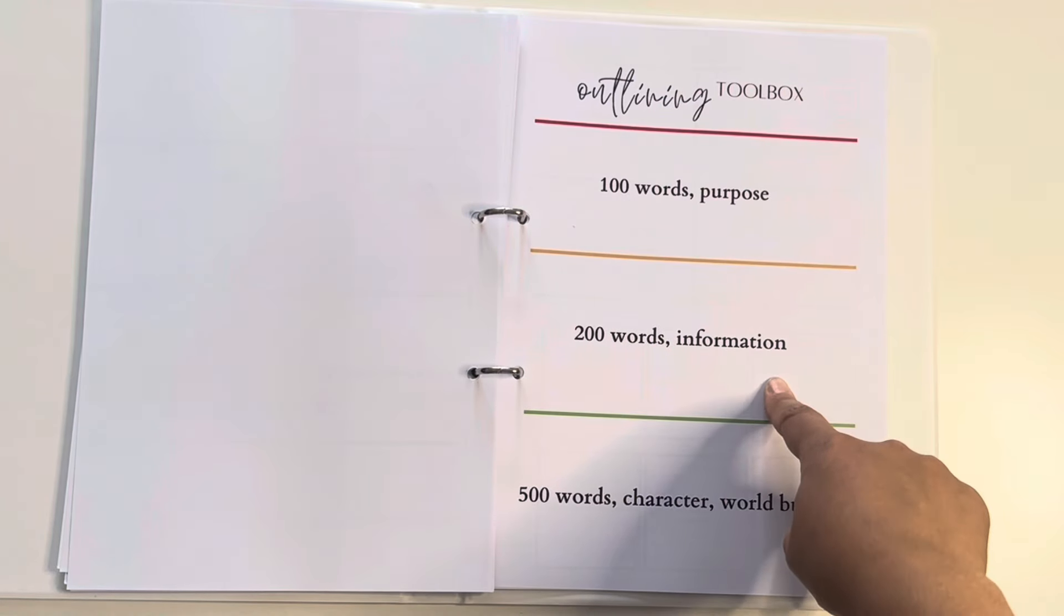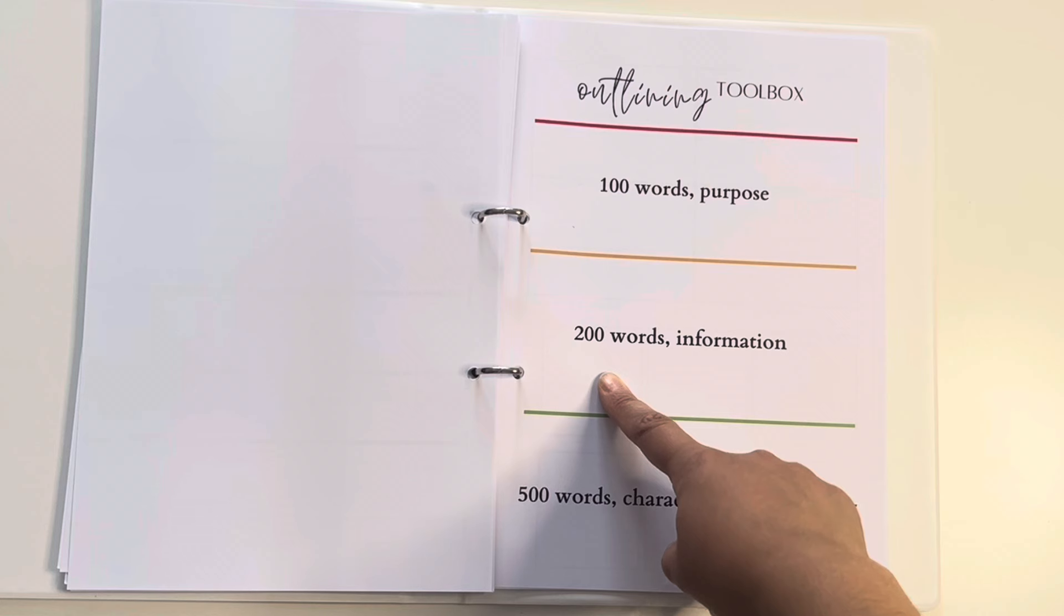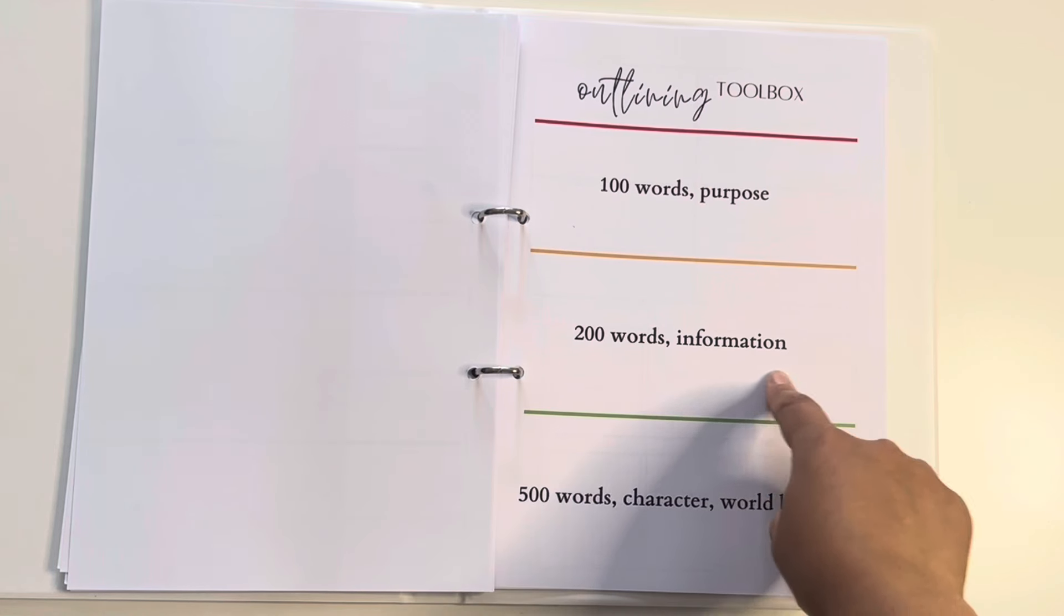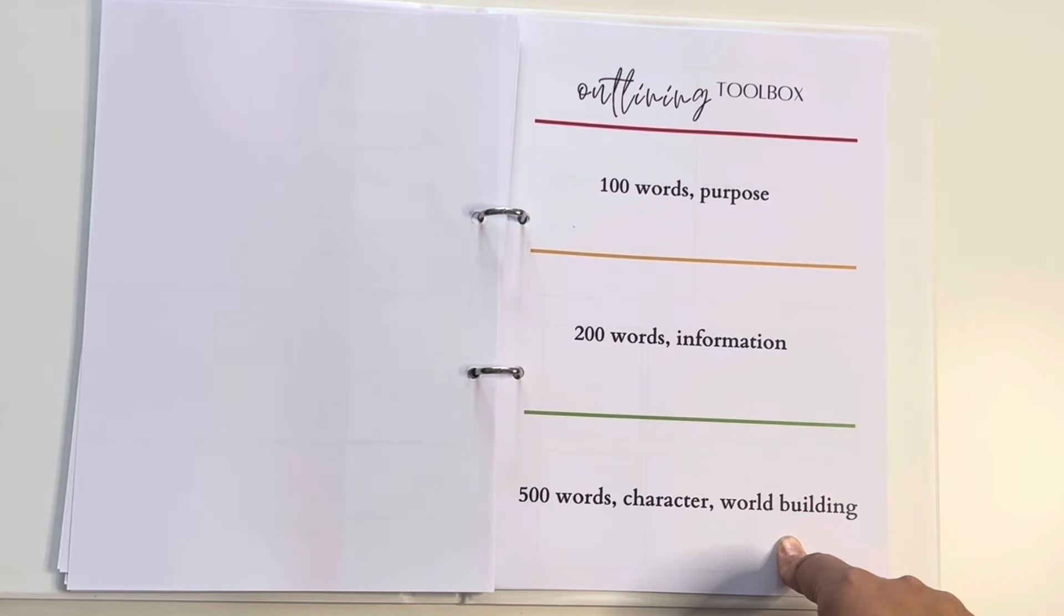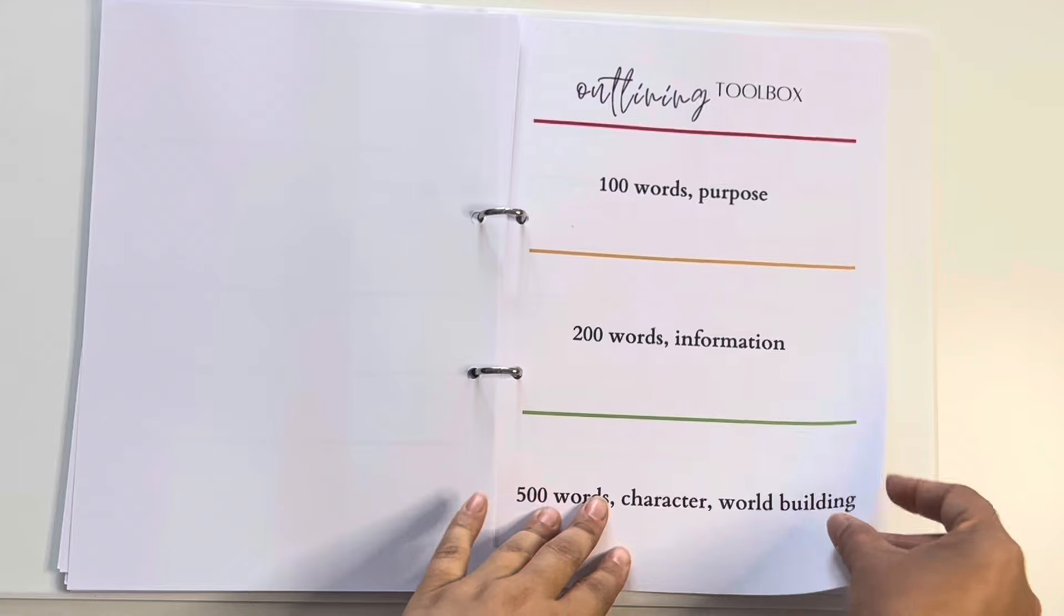And then we move into the orange, which has an additional 200 words and includes any information that they need to receive in the outline. And then we move on to the green, which includes an extra 500 words and what happens with specific characters that we learn and what happens with any world building that we learn. And again, it's all kept nice and neat.